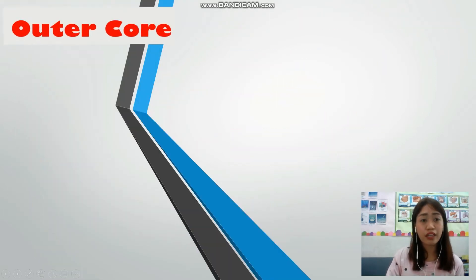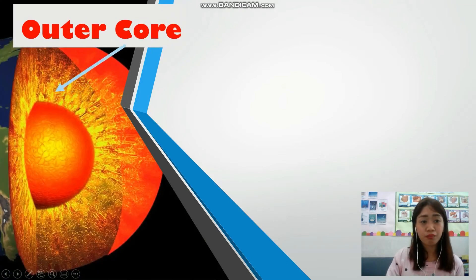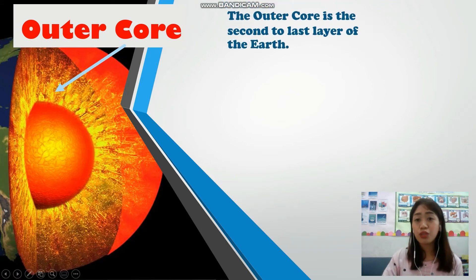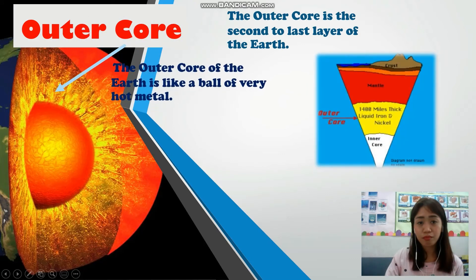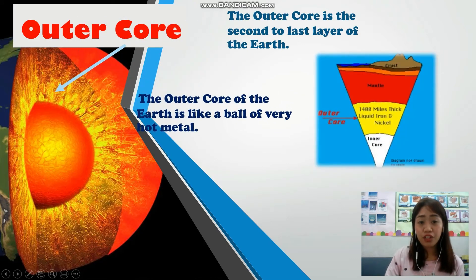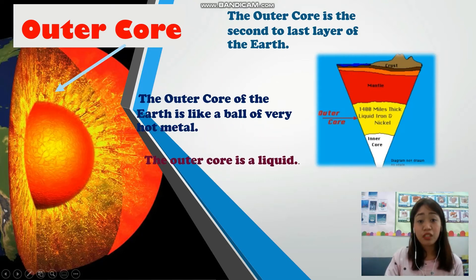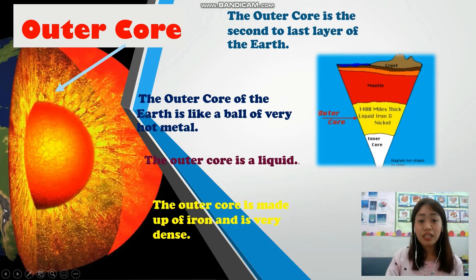Now let's continue with the outer core. The outer core is the second to the last layer of the earth. It is like a ball of very hot metal. The outer core is a liquid, made up of iron and is very dense.